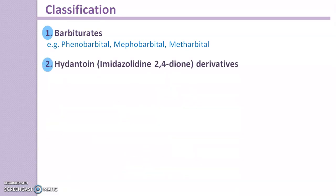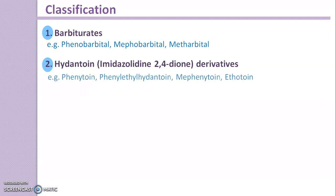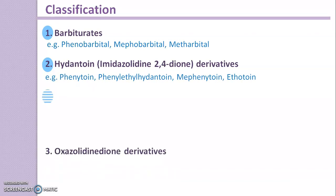The second class is Hydantoin derivatives, which are chemically imidazolidine-2,4-dione. Examples are Phenytoin, Phenylethyl-Hydantoin, Mephenytoin, and Ethotoin.